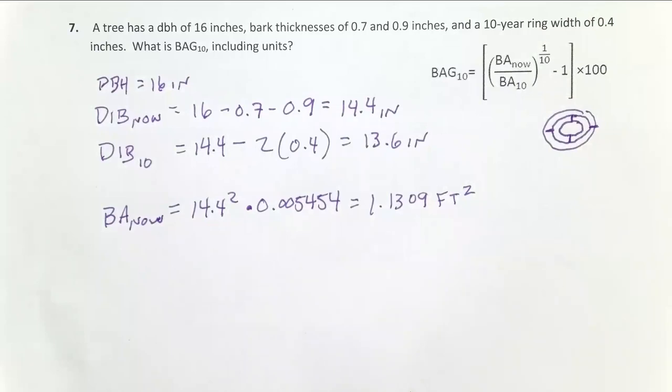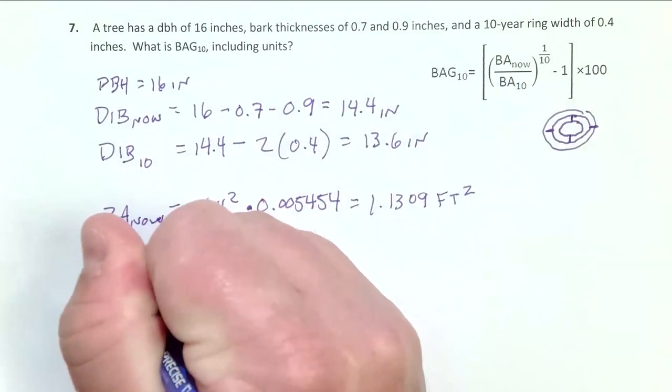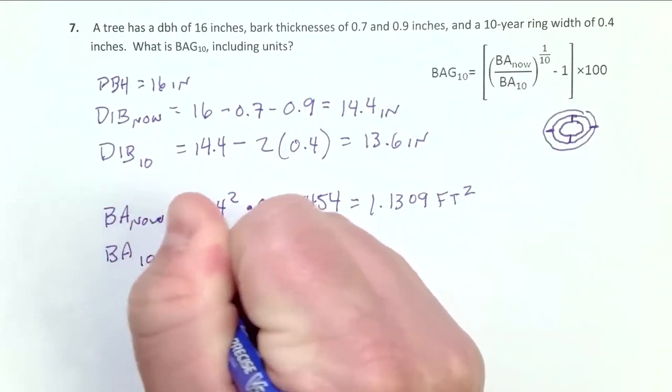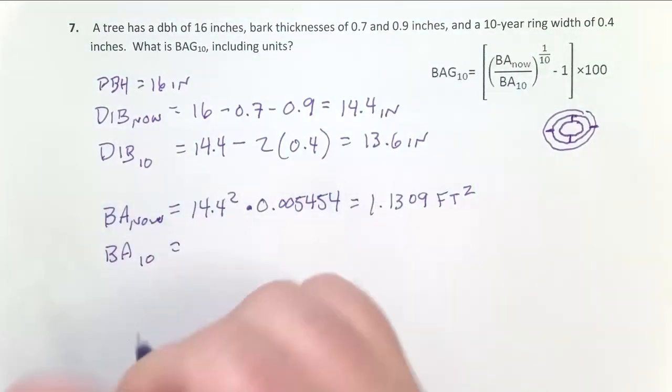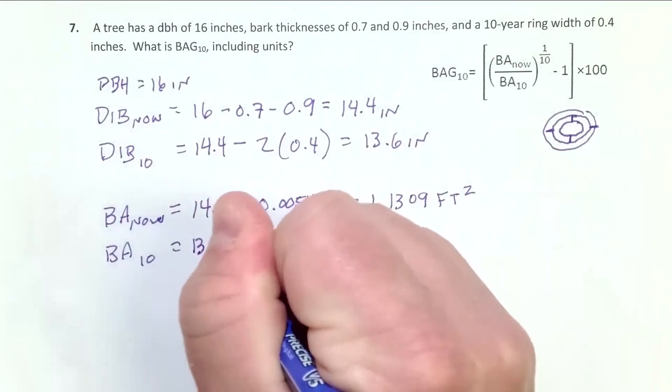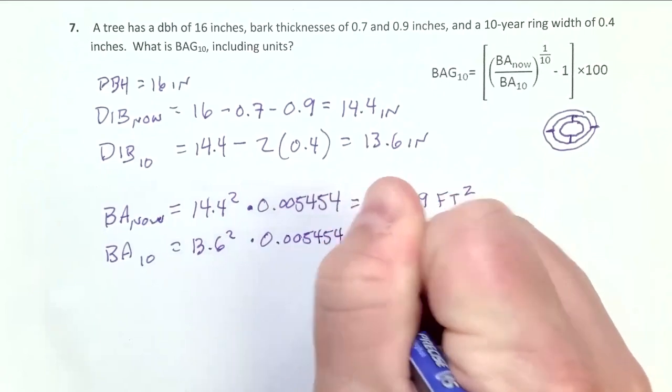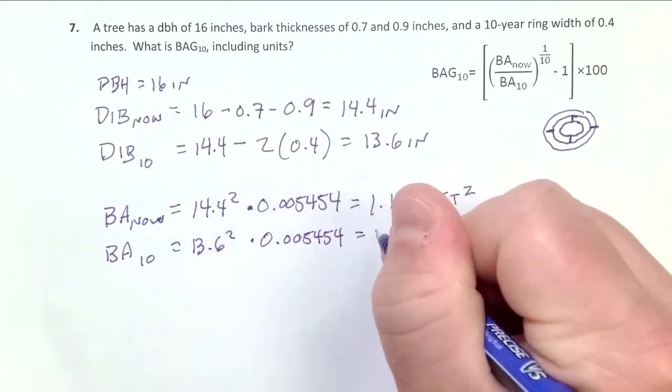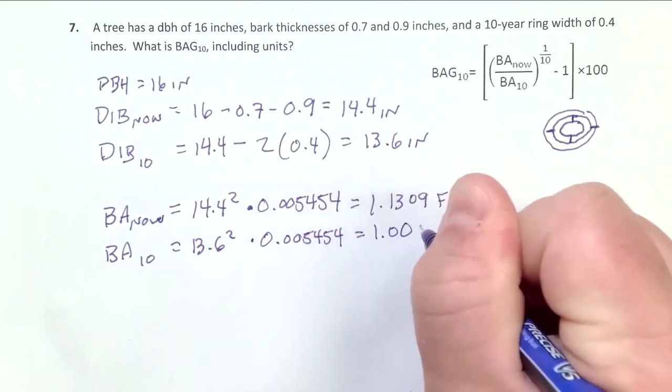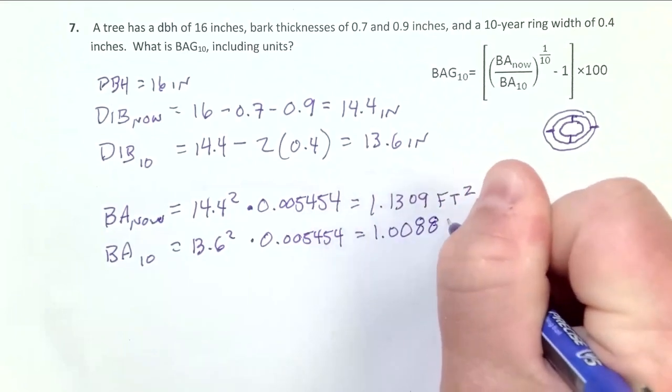Basal area 10 years ago is going to equal diameter 10 years ago inside the bark, 13.6 inches squared times 0.005454, equals 1.0088 feet squared.